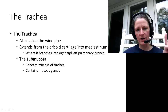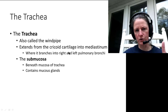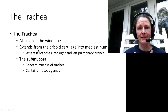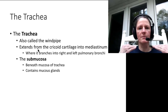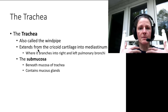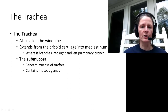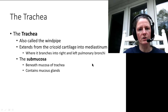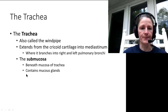Through most of the upper conducting portion, we have pseudostratified ciliated columnar epithelium. As we get into the smaller and smaller bronchioles, we start to see a transition into cuboidal epithelium.